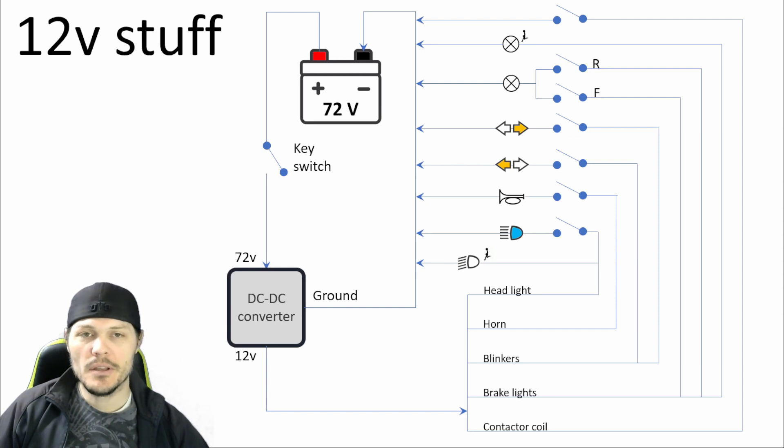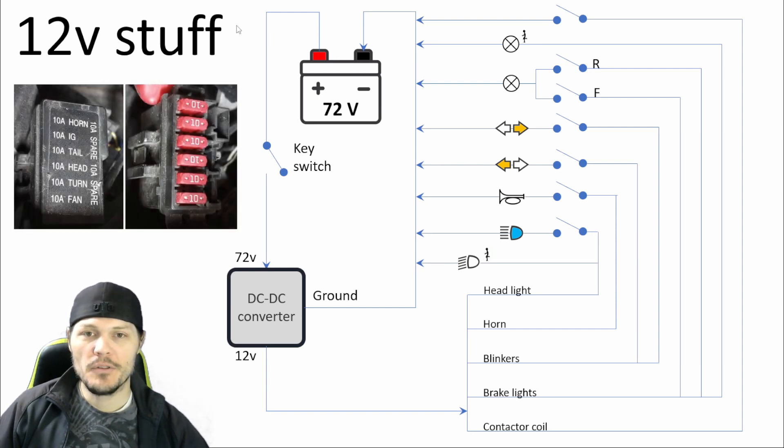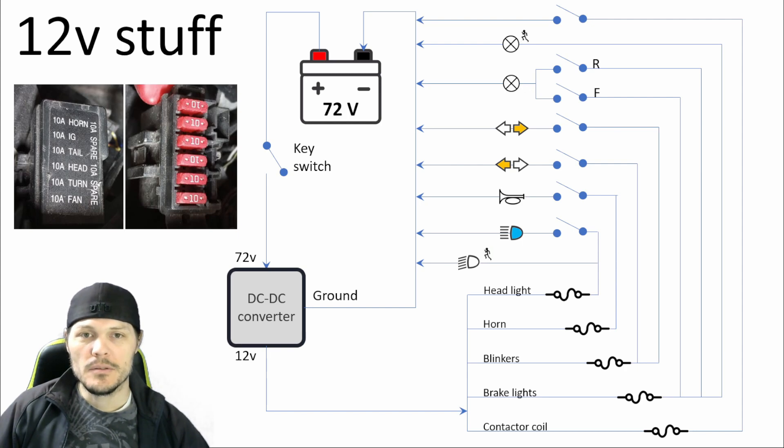As I was looking at the Ninja 250, I realized it's got fuses on a lot of these same circuits. The horn, the tail lights, and the headlights, and the turn signals. Clearly Kawasaki thought that was a good idea for a 12 volt system with 12 volt components to have fuses. So I think we ought to put them in too. On my diagram, I'm going to have my fuses upstream of the switches. I don't know if I'll use the OEM fuse box, but wiring fuses in line shouldn't be too bad. So there you have it. That's all the 12 volt circuits that I think I need. So let's move right along to the 72 volt stuff.